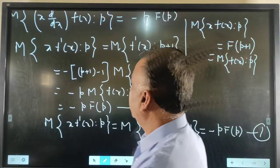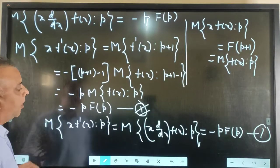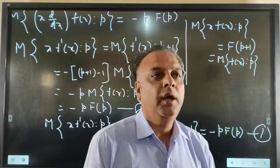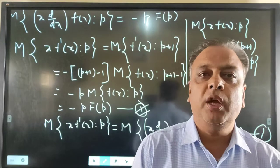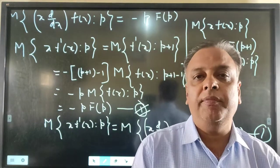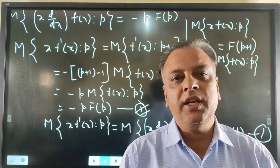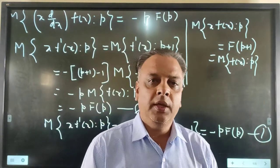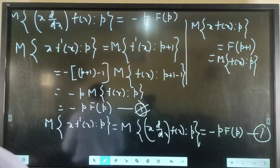So here we have proved that the Mellin Transform of the function (x d/dx)^n f(x) is equal to (-1)^n p^n F(p). Thank you very much.